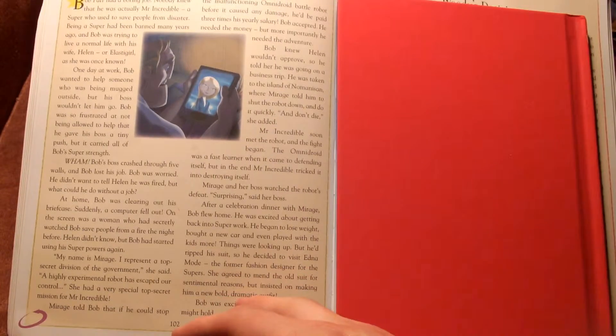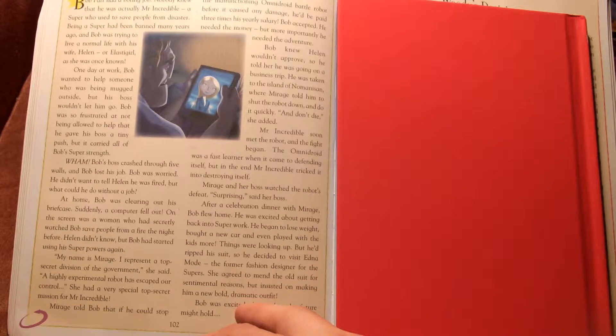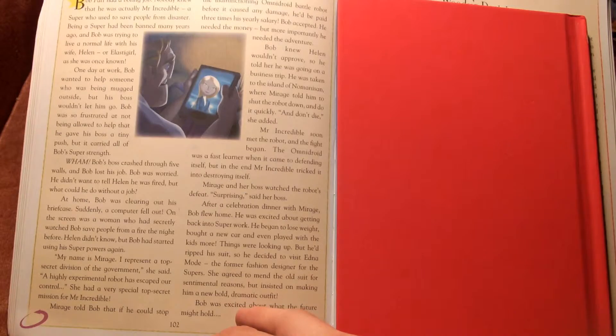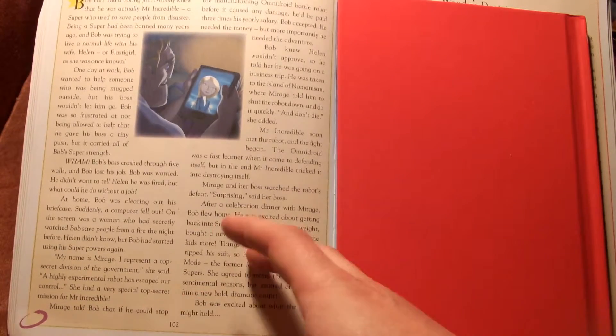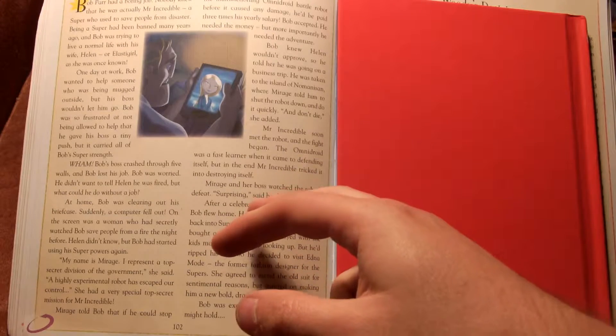Bob Parr had a boring job. Nobody knew that he was actually Mr. Incredible, a super who used to save people from disaster. Being a super had been banned many years ago and Bob was trying to live a normal life with his wife Helen, or Elastigirl, as she was once known.